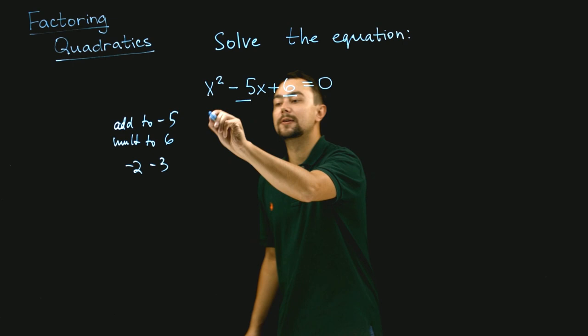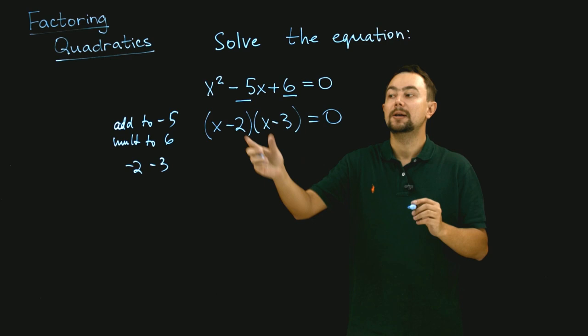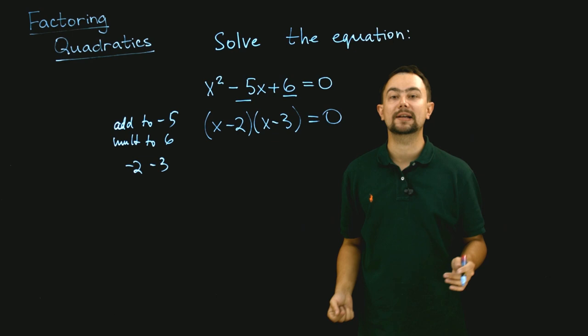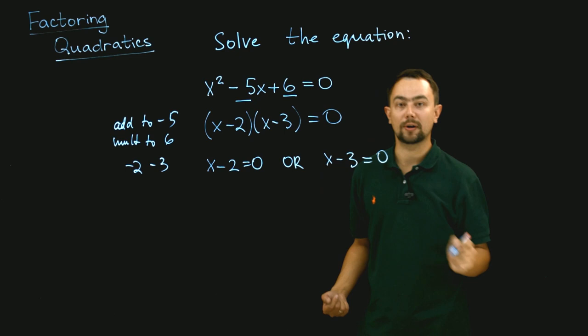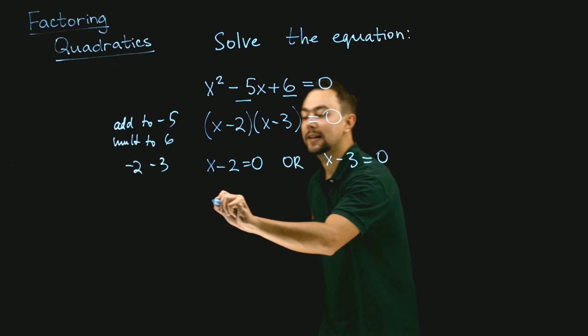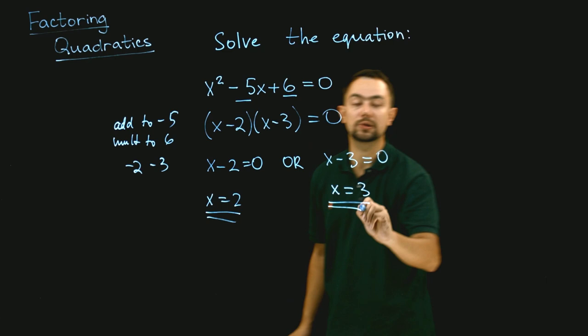So x minus 2 times x minus 3 equals 0. The product of two brackets is 0, which means one of the brackets must equal 0. So either x minus 2 equals 0, or x minus 3 equals 0. That means x equals 2 or x equals 3. These are the two possible solutions to the equation.